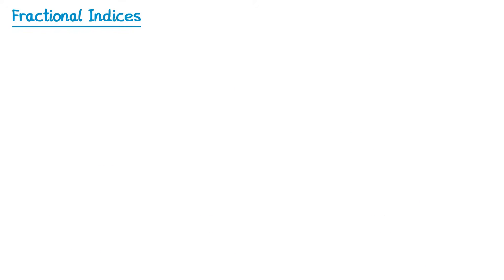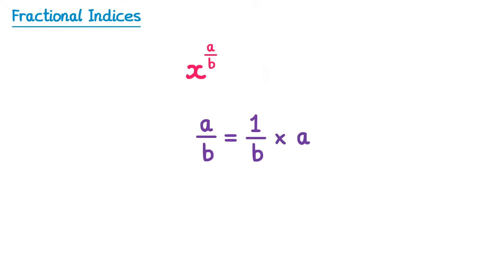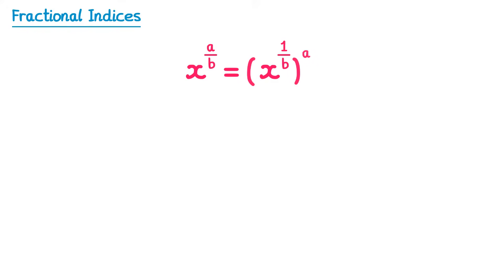So far we've looked at questions where the index is in the form 1 over n, so there must be a 1 on the top of the fraction — but it doesn't have to be a 1. Now let's extend this to look at questions where the fraction is in the form a over b, so it could be any number on top and any on the bottom. You can write a over b as a product: 1 over b times a. So we rewrite x to the a over b as x to the 1 over b, all to the power a. That gives us the bth root of x, raised to the power a.